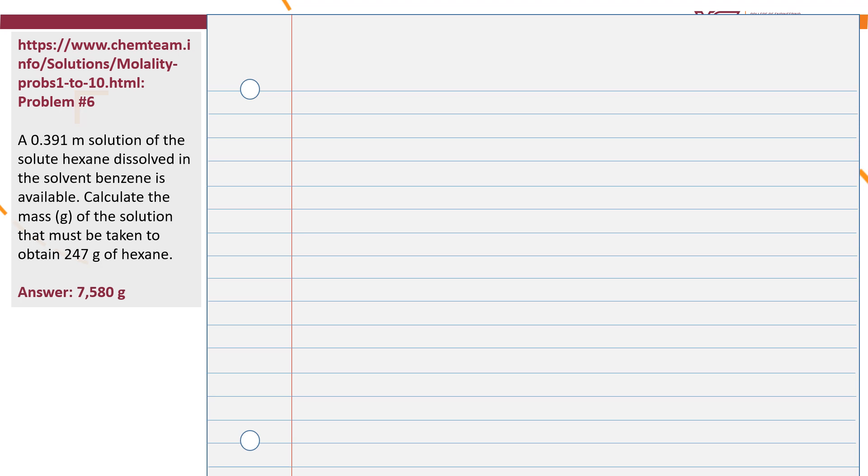A 0.391 molality solution of the solute hexane dissolved in the solvent benzene is available. Calculate the mass in grams of the solution that must be taken to obtain 247 grams of hexane. The answer is 7580 grams. The first thing I'm going to do is write where I got this problem at the top of the paper. This practice problem will be a study tool.